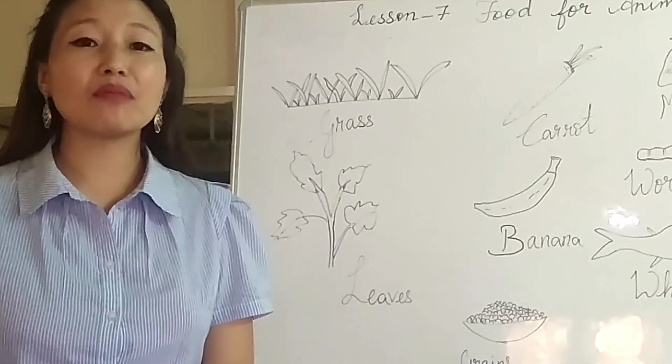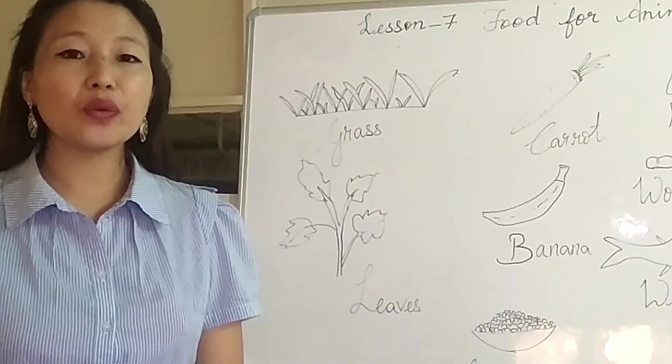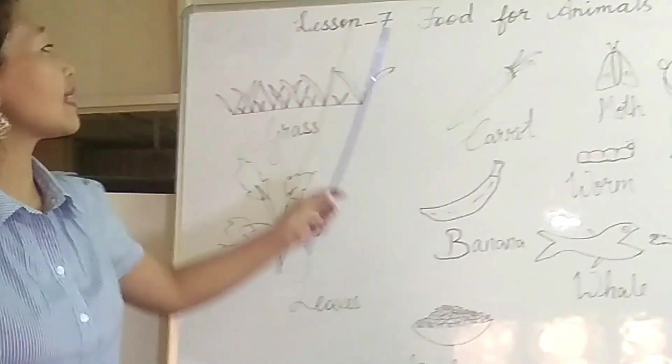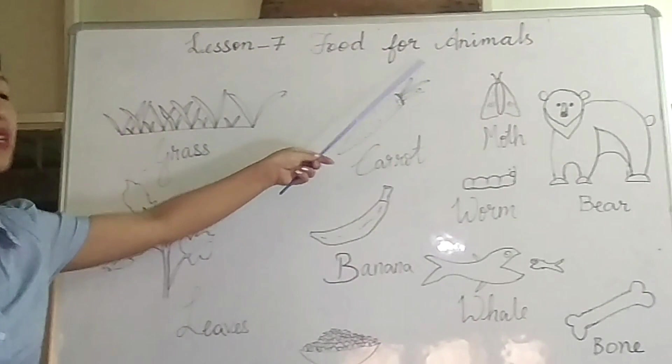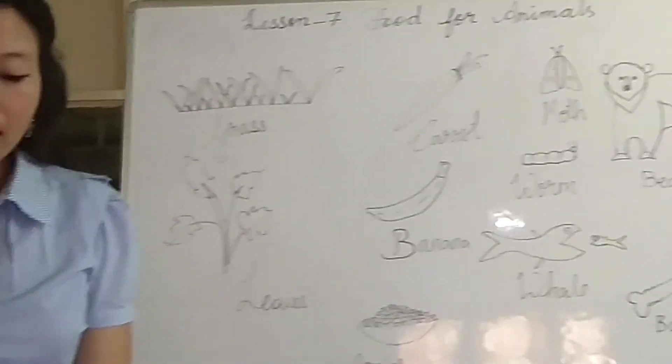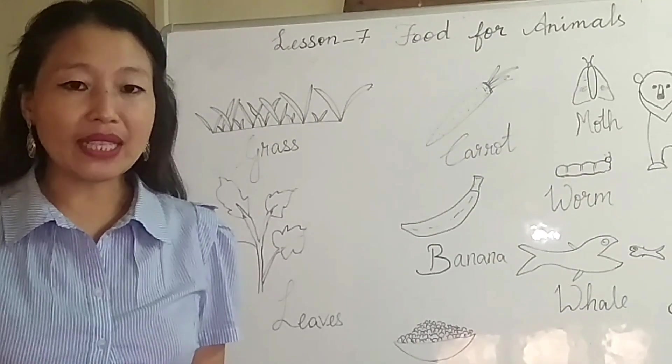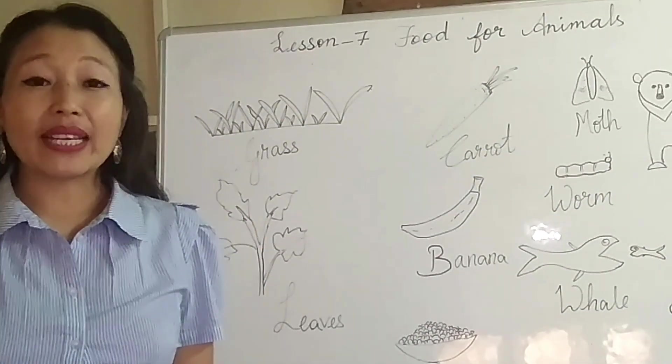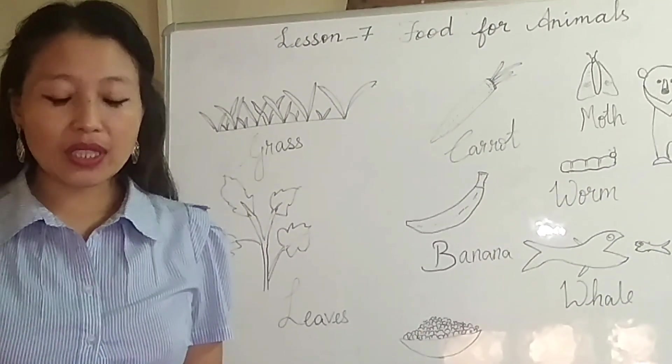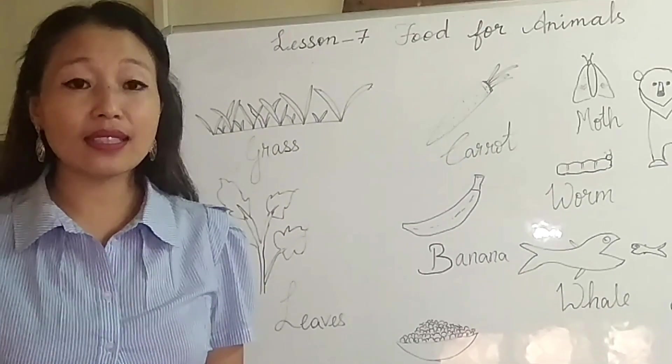Hello students, welcome to our video class. Today we will learn science lesson 7, that is food for animals. Children, all animals need food to survive like humans. It is a basic need and without food they cannot live.